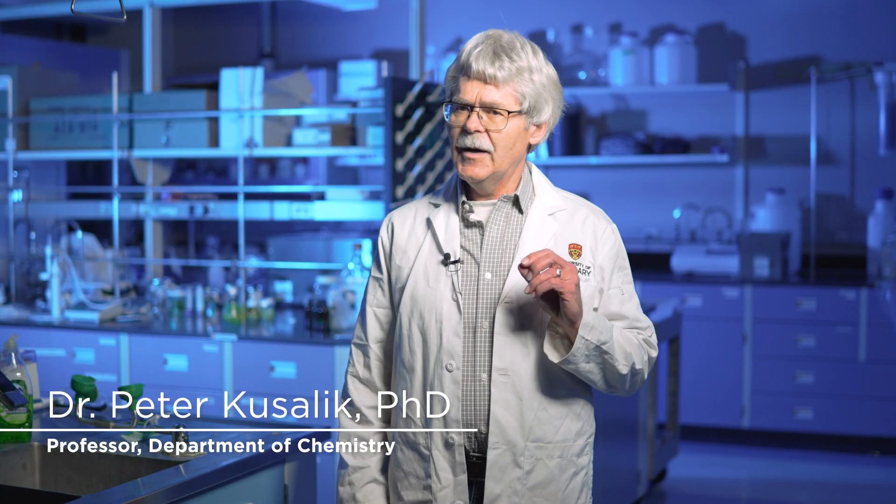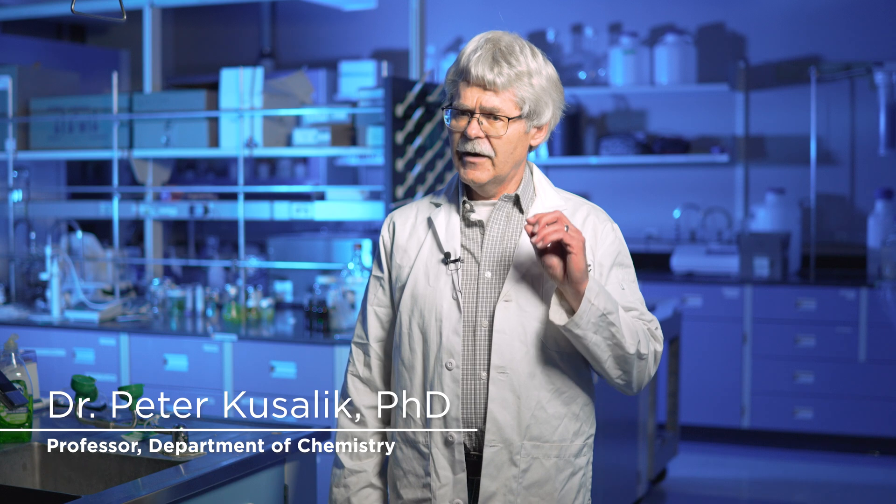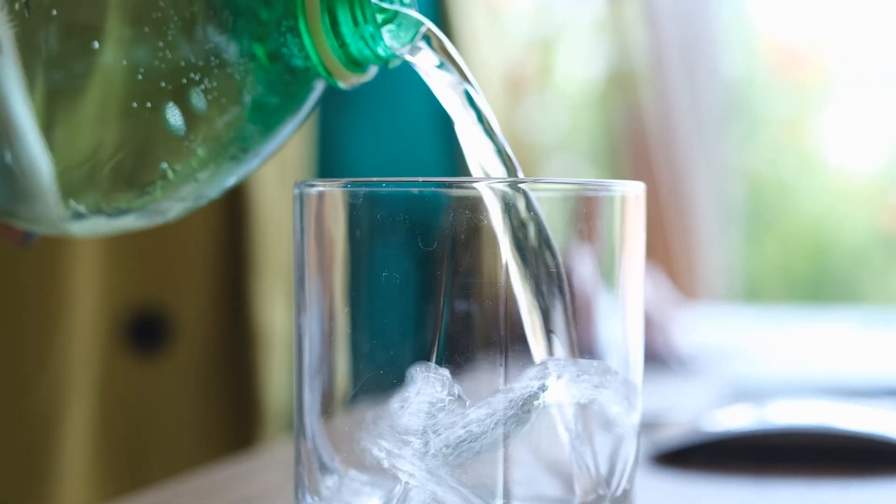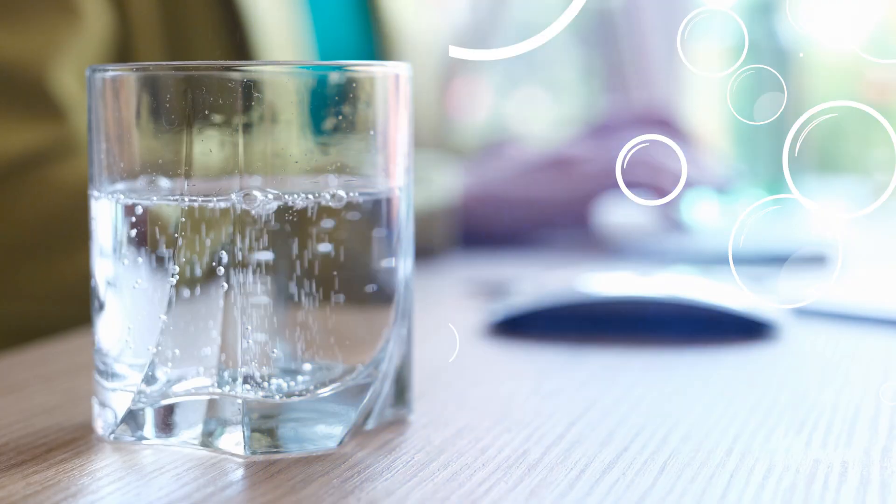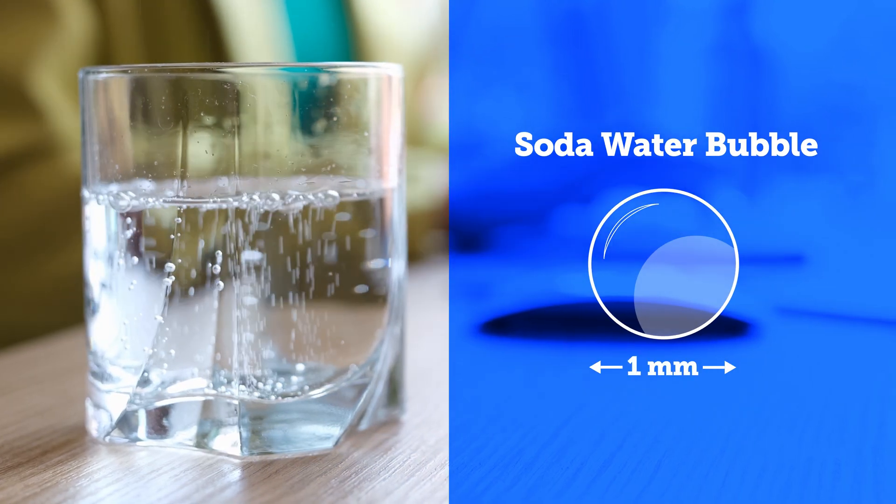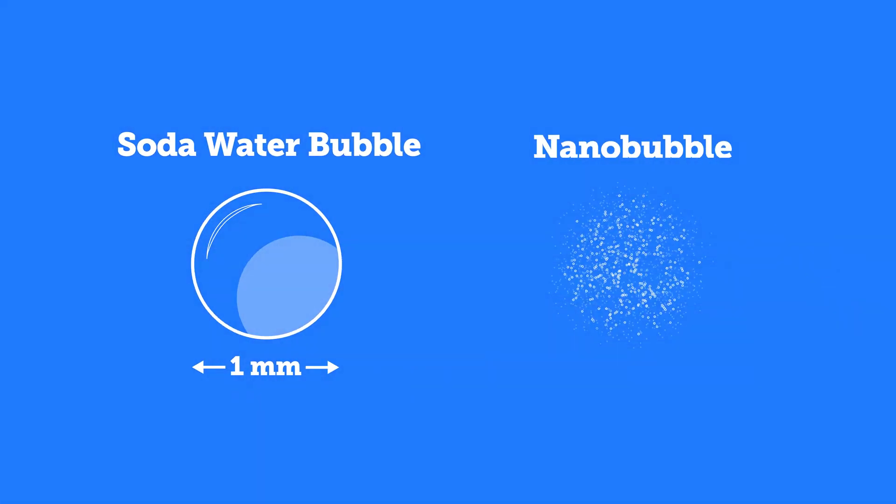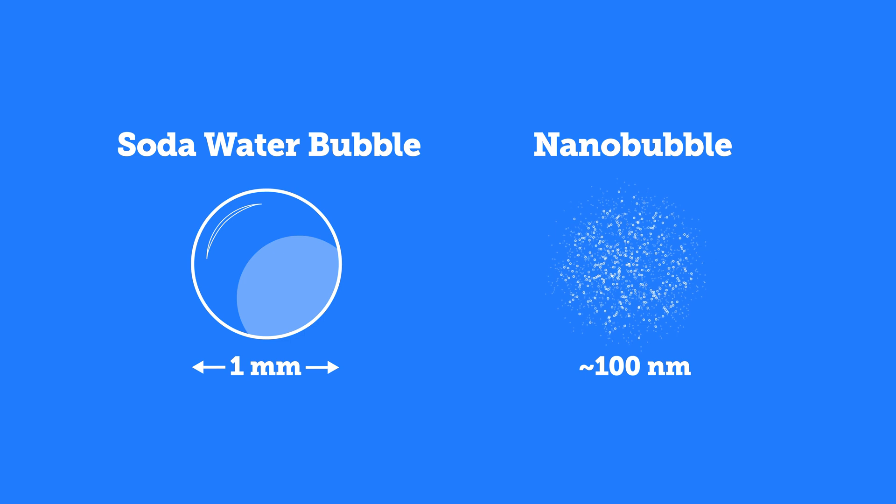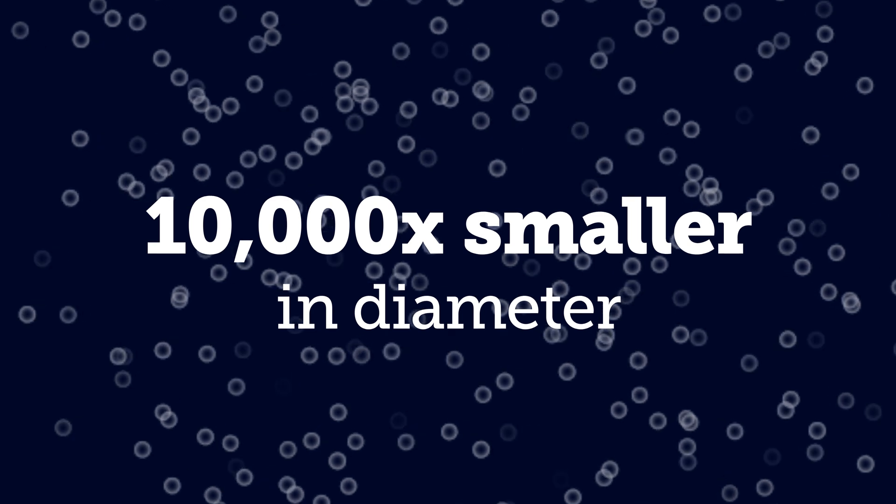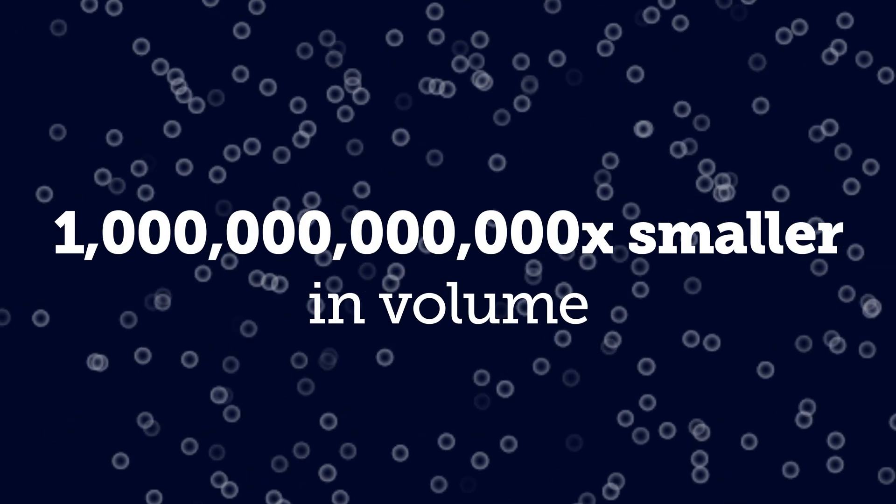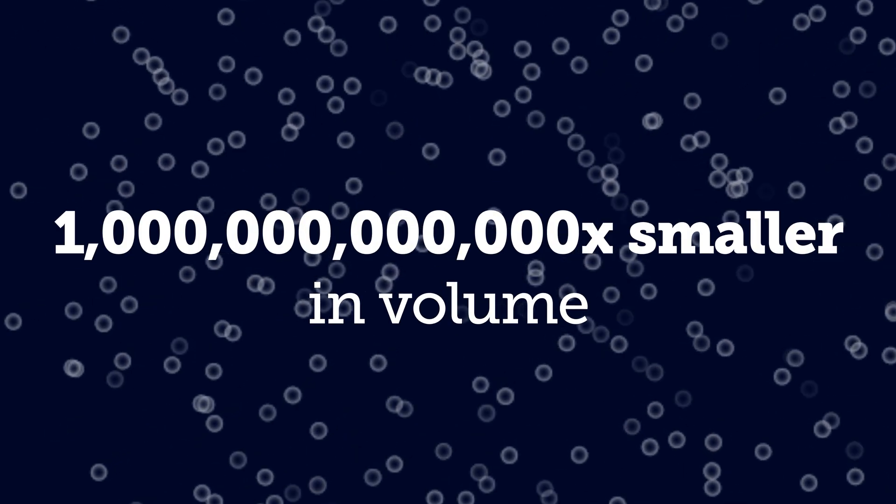The really neat thing about nanobubbles is, one, they're very small. The kind of bubble that you would see in soda water might be, let's say, a millimeter in diameter. So the nanobubble, the diameter at 100 nanometers is 10,000 times smaller, but that then means that its volume is a trillion times smaller than that bubble that you can see in the club soda.